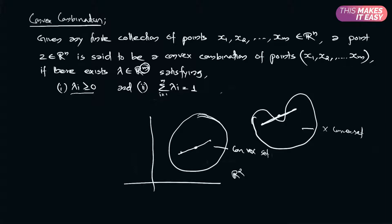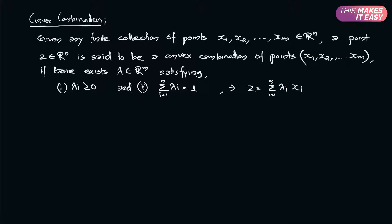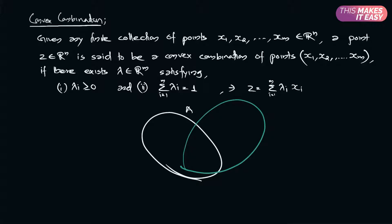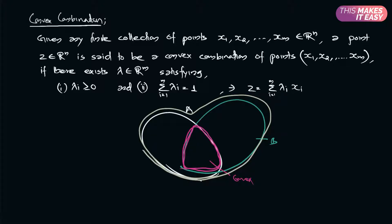Now let us talk about the intersection and union of two convex sets. We have a convex set A and another convex set B. The intersection of A and B is again a convex set. However, the union of A and B might not be a convex set — if I take two points, one from each part, the convex combination of those two points may not lie inside the union. So the union of two convex sets might not be convex, but the intersection of two convex sets will always be convex.